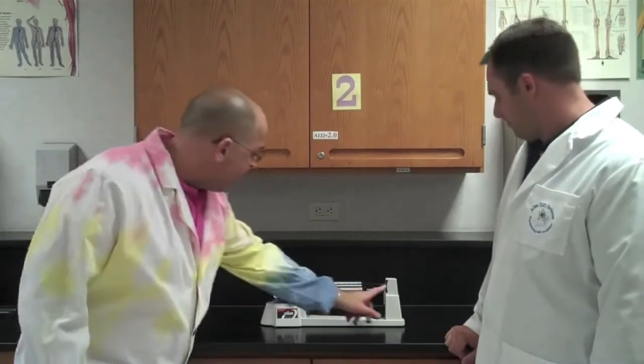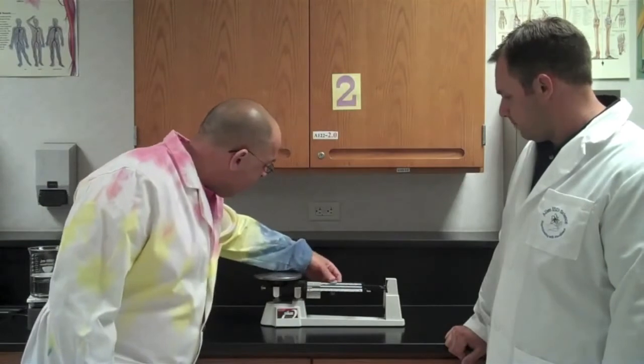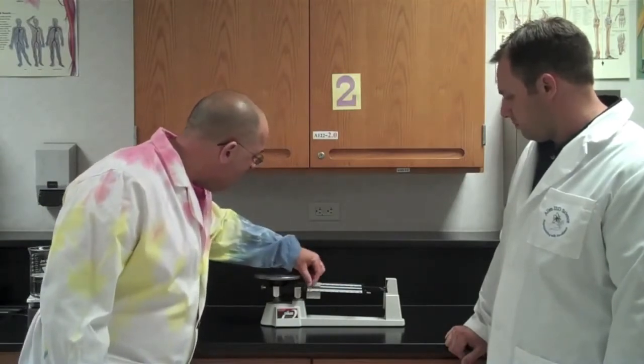So the first thing you do is you are going to make sure that the scale, the triple beam balance, is zeroed out. And so there's a zero sign right over here. And all these weights that click in have to be on the zero mark and then this thing has to be at zero because otherwise you will not get an accurate reading.